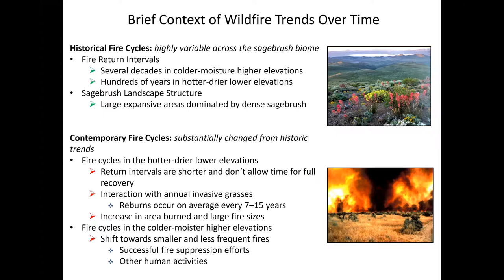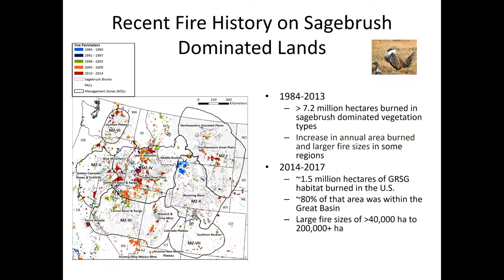At higher elevations, we've seen a shift towards smaller and less frequent fires. This is mainly due to successful fire suppression efforts, as well as other human activities such as human development and grazing practices that disrupt fuel continuity in these areas. Between 1984 and 2013, over 7.2 million hectares burned in sagebrush-dominated vegetation types, and we've seen an increase in annual area burned and larger fire size in some regions.